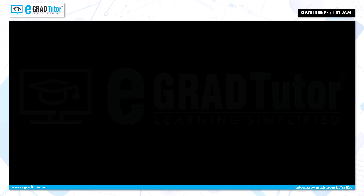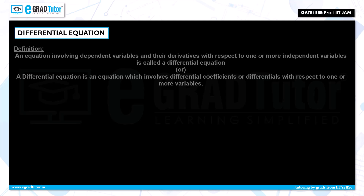Let us see the definition of a differential equation. An equation involving dependent variables and their derivatives with respect to one or more independent variables is called a differential equation. For example, you have a function y equal to f of x. Here y is a dependent variable, x is an independent variable.